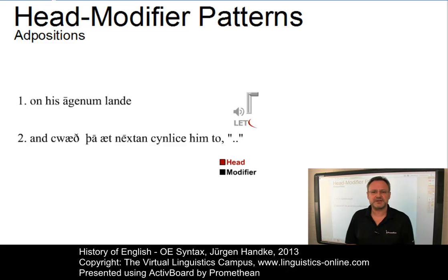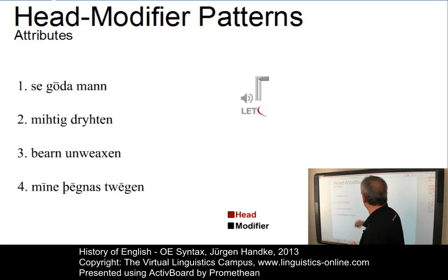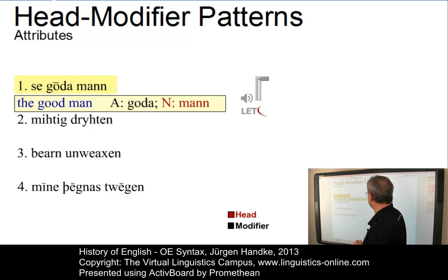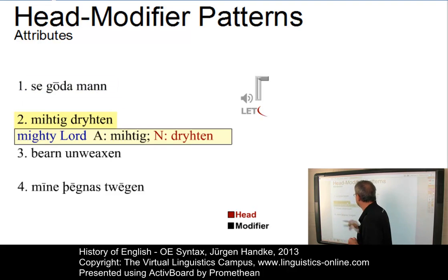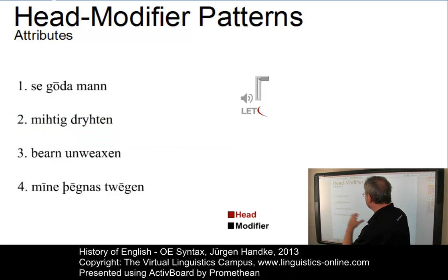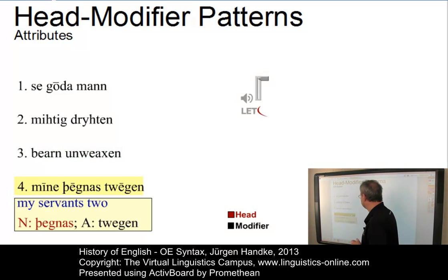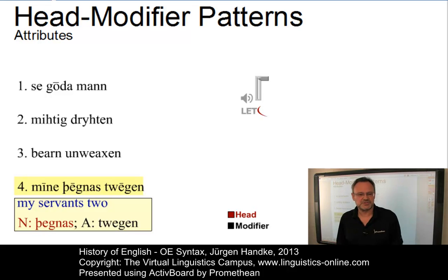Another typical head modifier pattern is the noun-adjective pattern where the noun is the head. Both sequences were possible. In the first two examples — 'the good man' and 'michtich Drüchten' — the adjective precedes the noun. In the remaining examples — 'Bern anwechen' meaning 'the youthful boy,' and 'Mine theinas tween' meaning 'my two servants' — the noun comes first, which would be totally impossible in present day English.